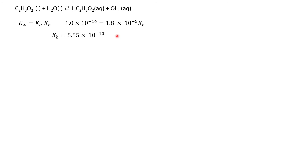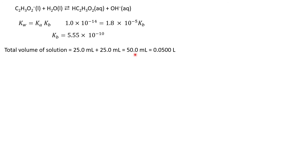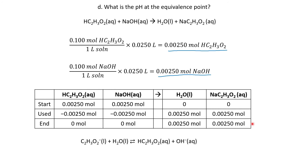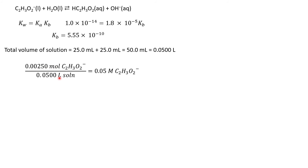Because I have a weak base in solution, I need an ICE table, which means I need concentrations. I have moles, so I need my total volume. I started with 25 milliliters of acid and added 25 milliliters of base, giving a total volume of 50 milliliters or 0.05 liters. Taking my moles of acetate — formed from the previous stoichiometry step — and dividing by liters of solution, I get a concentration of 0.05 M for acetate.